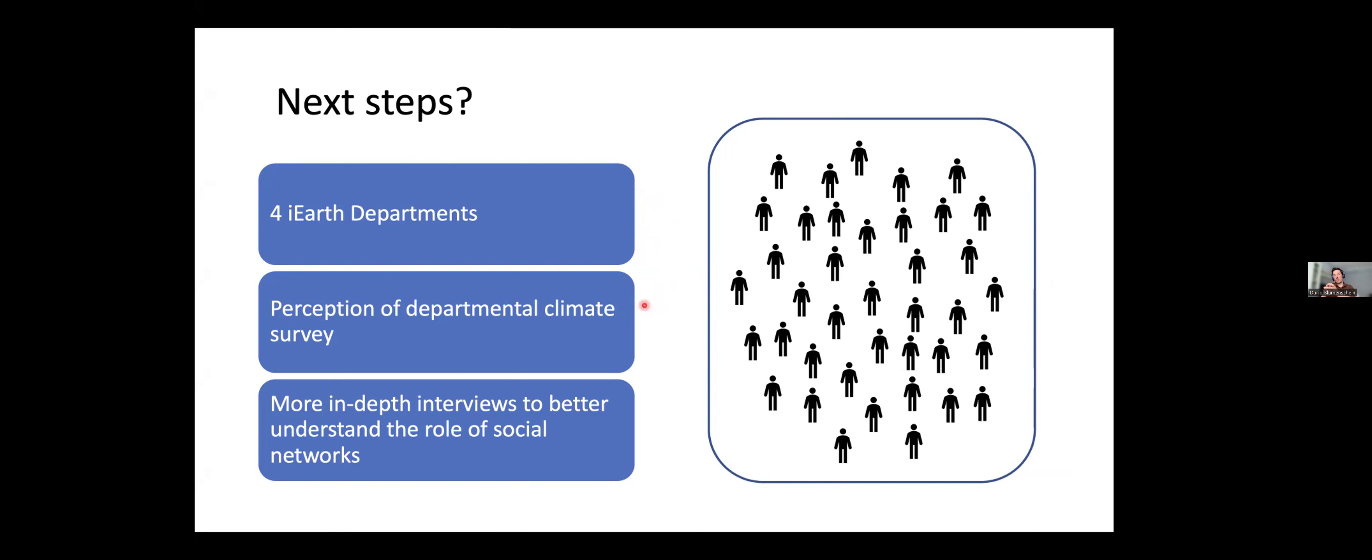But now we look at the perception of departmental climate rather than asking about innovativeness. We're looking at how does the departmental climate, how do people feel at the department relate to their social networks at the department. And then hopefully we would at some point have also more in-depth interviews to better understand the role of social networks. So it's not just this pure surface level quantitative numerical analysis of networks, but that we actually can talk to these people and see how they perceive change and networks. And then how can we go about having a more holistic way of implementing changes in higher education.